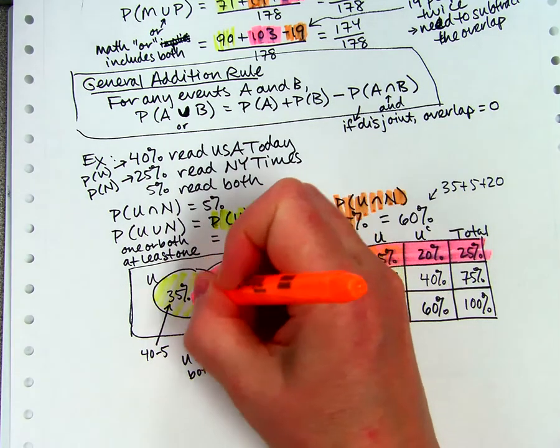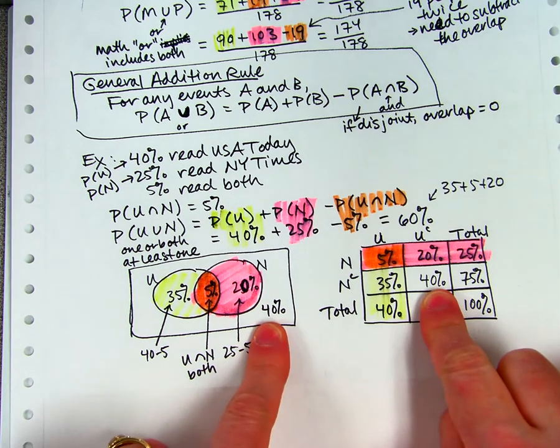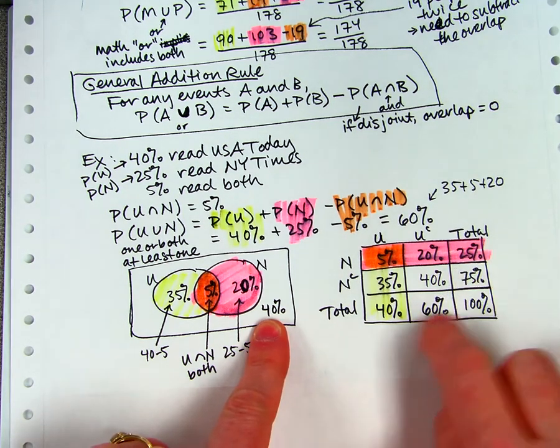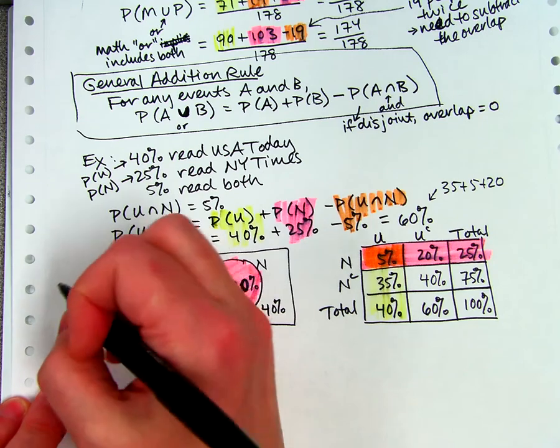This is the both. This is the neither, and it matches that. These numbers don't have a place to be written on the Venn diagram, which is why I like the Venn diagram better.